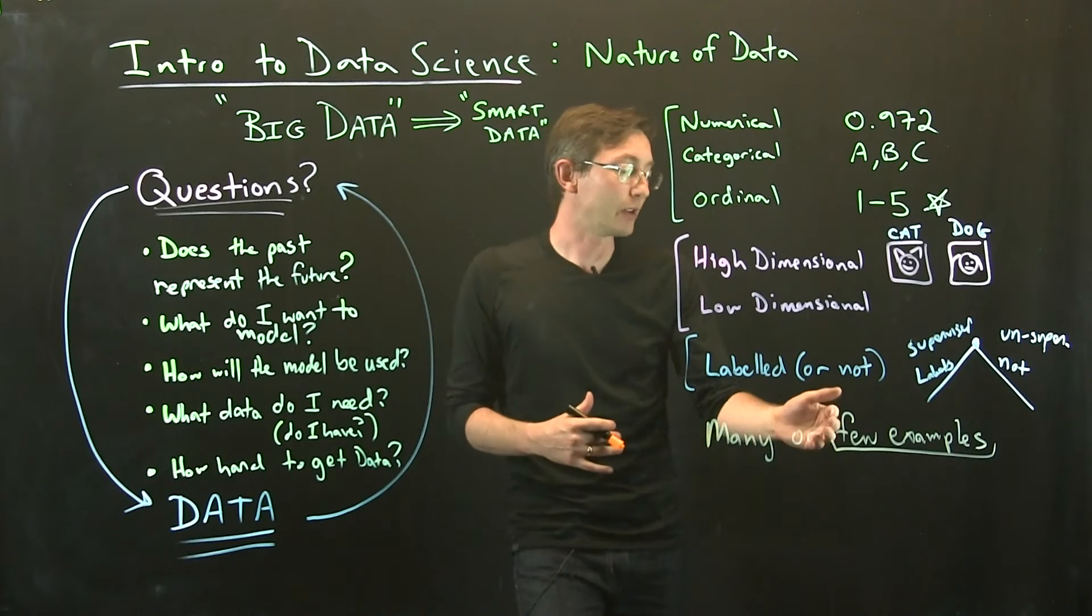On the flip side, I might have lots of measurements but only very few examples. The human genome project might have one person where I've sequenced their whole genome, all this massive high dimensional data for one person or maybe five people. It's very expensive to sequence a whole genome. I might have very few examples but a ton of data for those few examples, often called deep data.